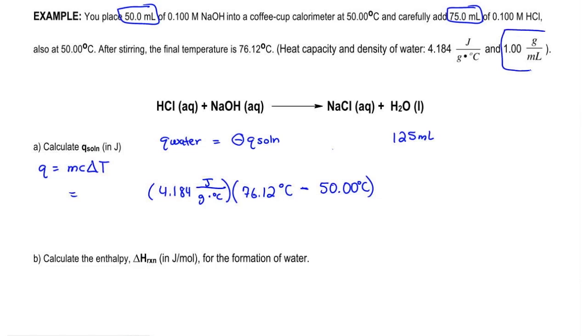Since I know the density of water here, I can use that to find the grams of water. So, multiply this times the density, mLs cancel out and I have 125 grams of water which I can just plug into here.